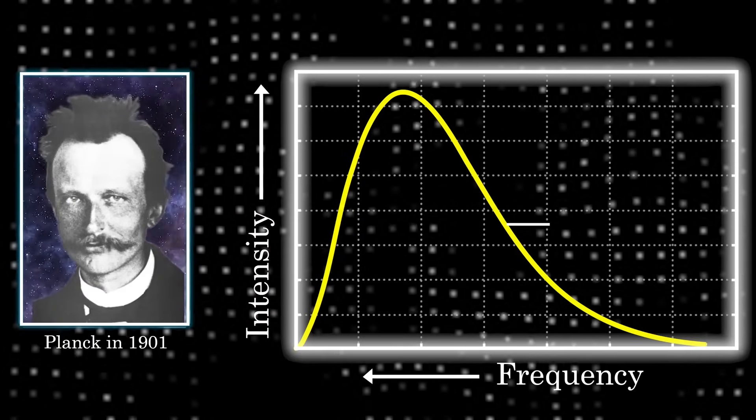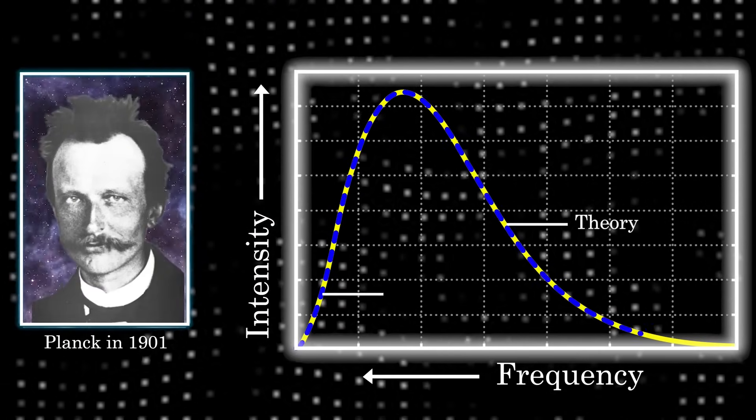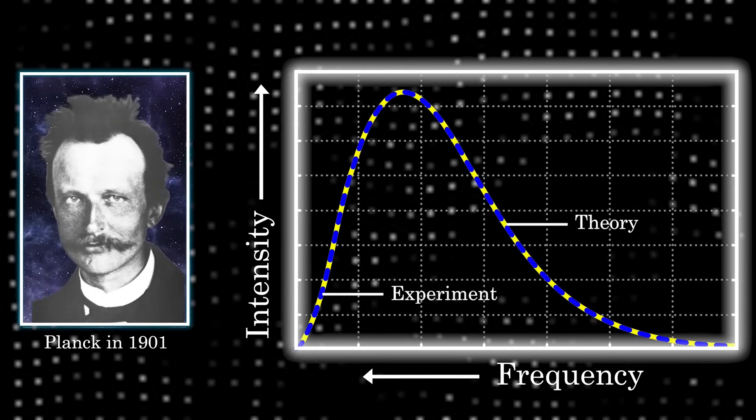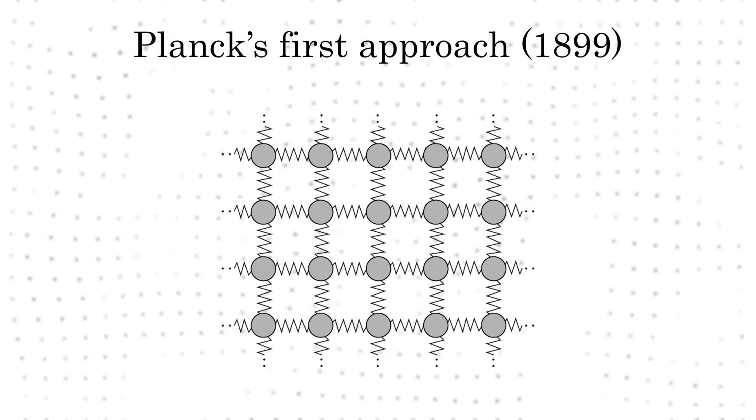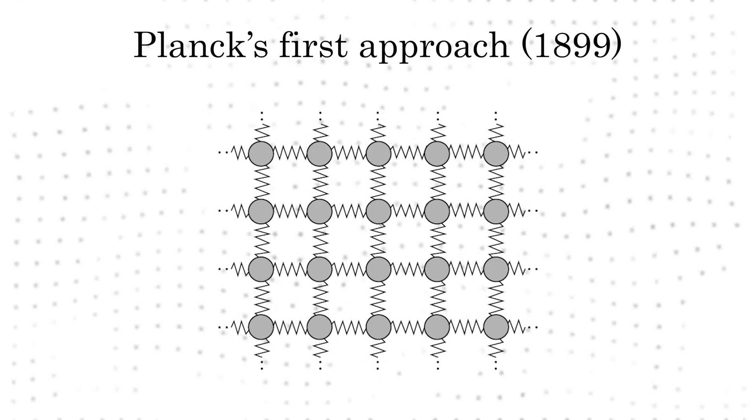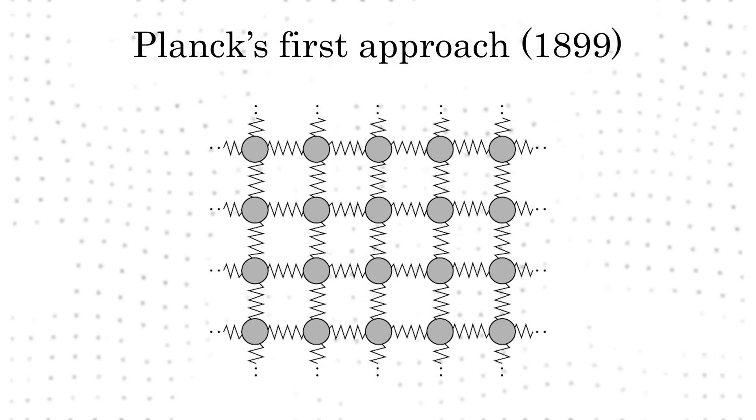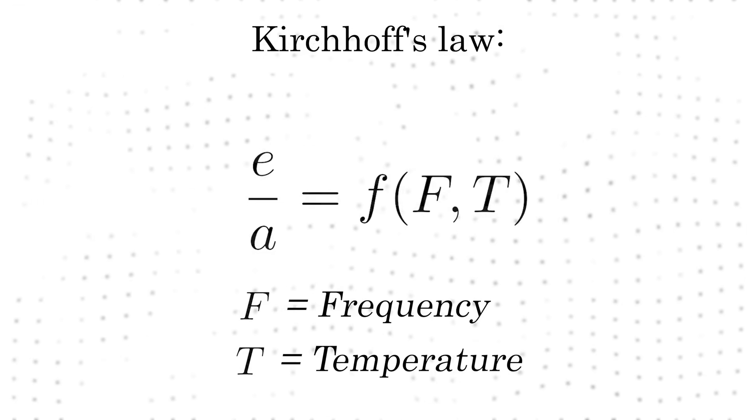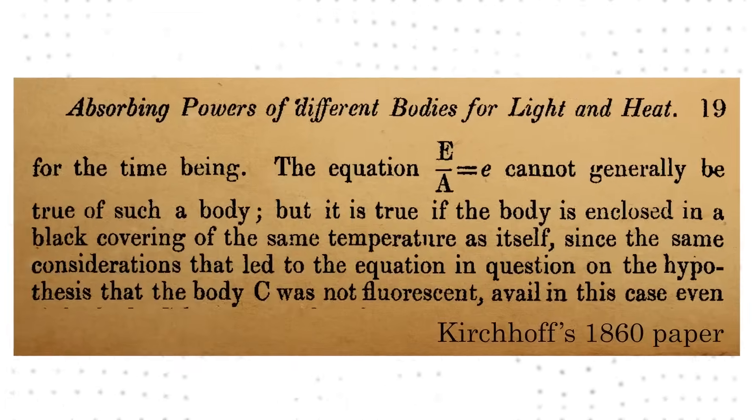This insight later proved to be crucial for Planck's work on blackbody radiation. Since the function was universal, Planck could model the metal as a simple system of harmonic oscillators, essentially a toy model, and still trust that his results applied to real materials, regardless of their microscopic details. In fact, Planck's breakthrough work on blackbody radiation in 1900 is a direct solution to the challenge proposed by Kirchhoff 50 years before.